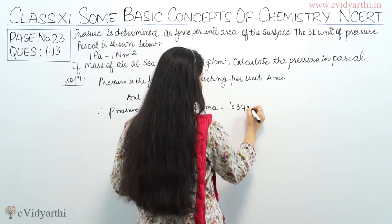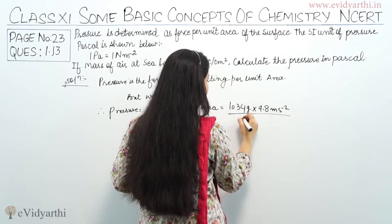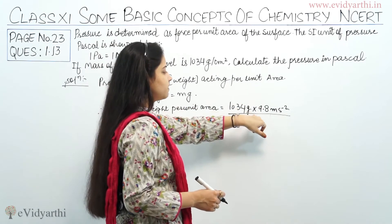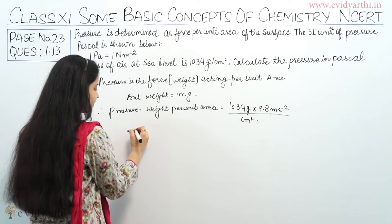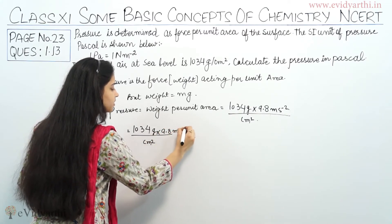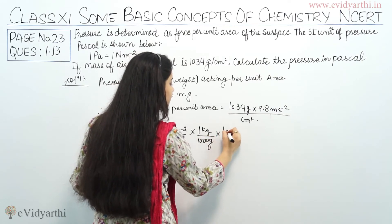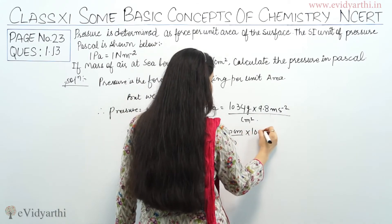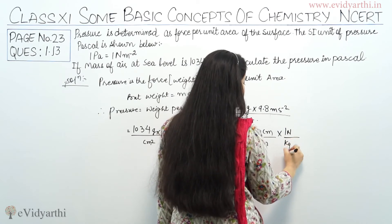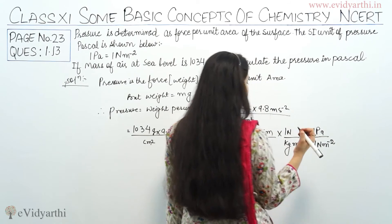So now I need to calculate the pressure in Pascals, so I need to change these values into Pascals. So: 1034 gram per centimeter square, multiplied by 9.8 meter per second square, multiplied by 1 kg per 1000 gram, multiplied by 100 centimeter per 1 meter, multiplied by 100 centimeter per 1 meter, multiplied by 1 Newton per kg·m/s², multiplied by 1 Pascal per 1 Newton per meter square.